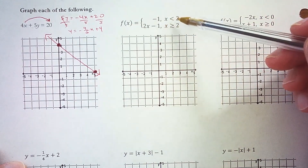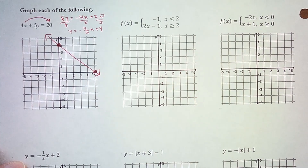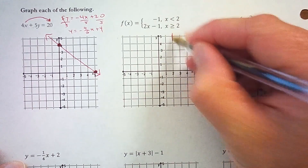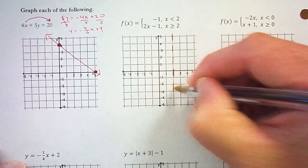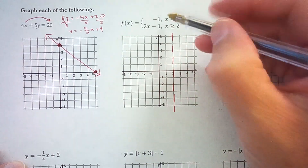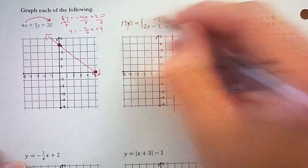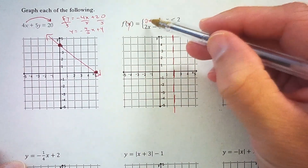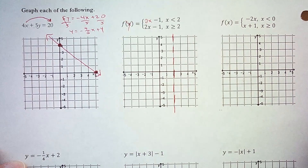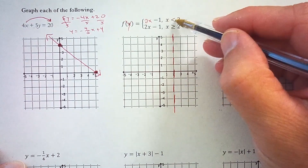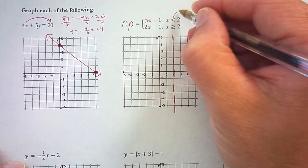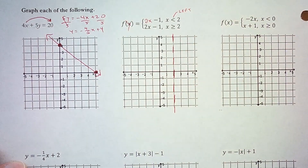Next, we have two parts of lines to graph in two different domains — this is a piecewise function. Each piece has an edge of the domain at x equals 2, so let's dot in a vertical line there. One piece will be on the left side, one on the right. The first line is y equals negative 1, which has a slope of 0 and a y-intercept of negative 1, so it's a horizontal line, but only graphed for x less than 2. That means we graph to the left side of x equals 2.